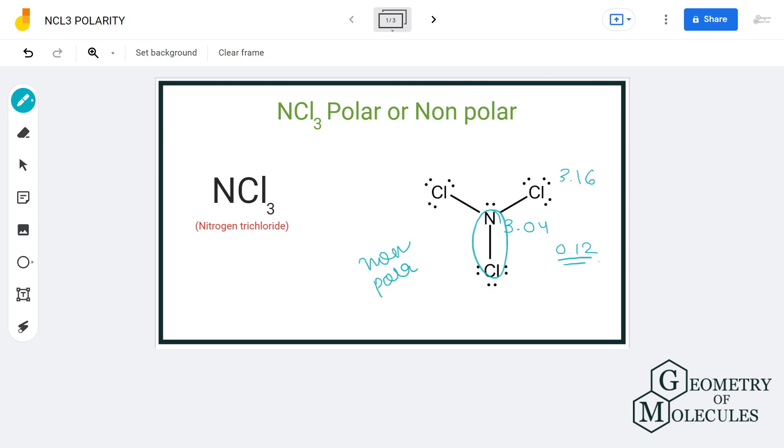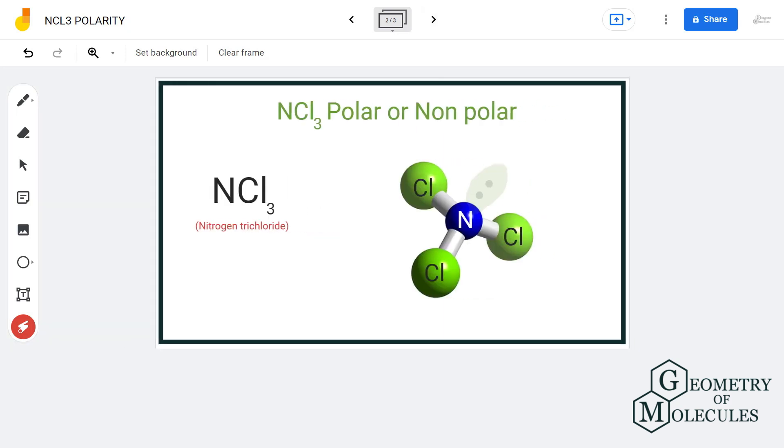But here in this case, we also have a lone pair of electrons on the central atom that induces asymmetry in the molecule because it exerts repulsive force on nitrogen-chlorine bonds. Because of that, the geometry of the molecule is trigonal pyramidal, which looks like this.